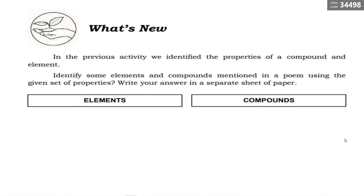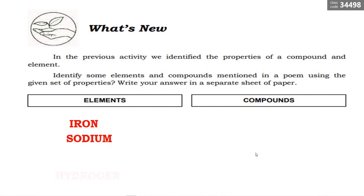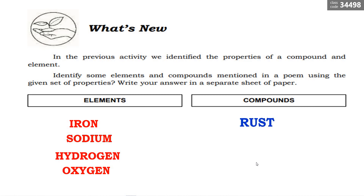Here is a follow-up question. In the previous activity, we identified the properties of a compound and element. Identify some elements and compounds mentioned in the poem using the given set of properties. For elements, we have iron, sodium, hydrogen, and oxygen. For compounds, we have rust, salt, and alcohol.